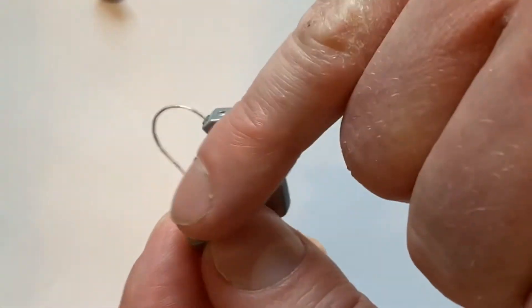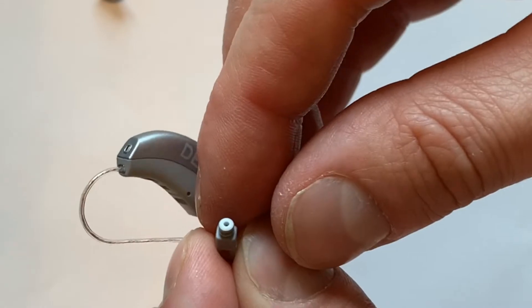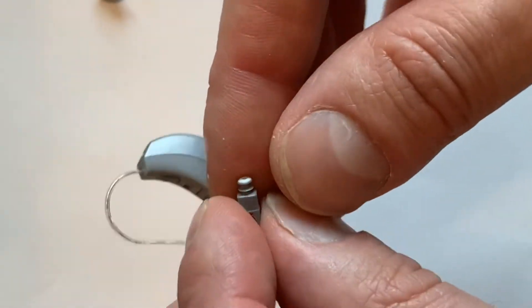And then once you've removed that, you've exposed the filter that's sitting right here in the end. That's what's called a Ceruse Stop WaxGuard.